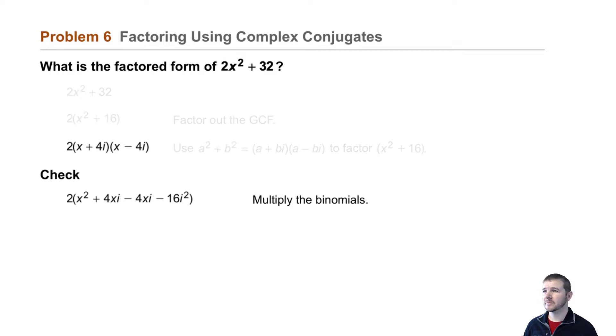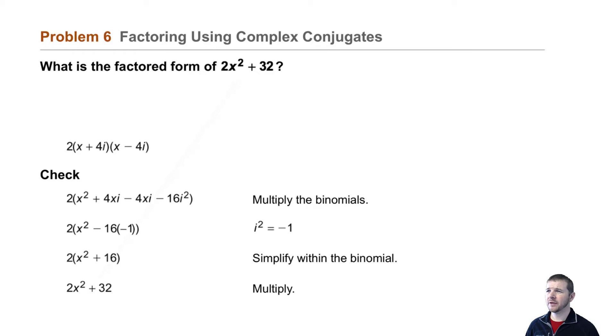We can check by multiplying our factors and making sure we arrive back at our original expression 2x² + 32. Multiplying the binomials brings us to 2 times x² minus 16 times negative 1. Simplifying, we do get back to 2x² + 32.